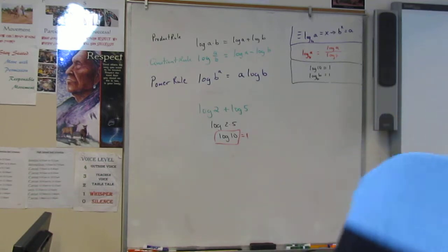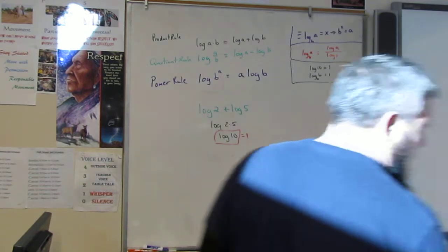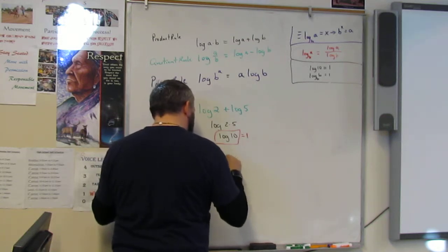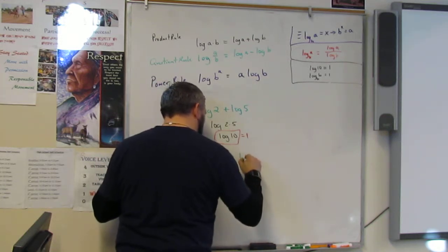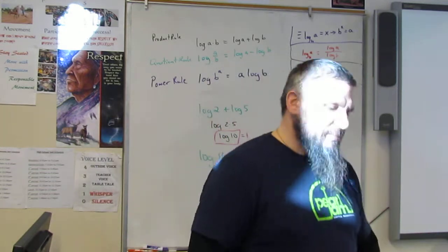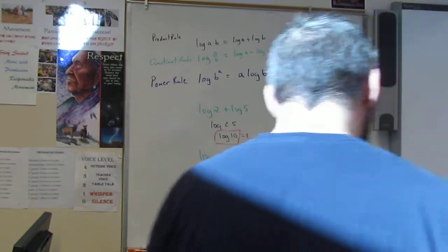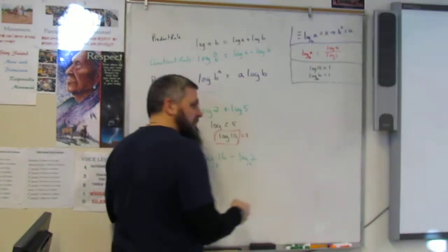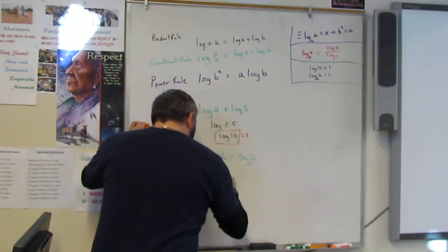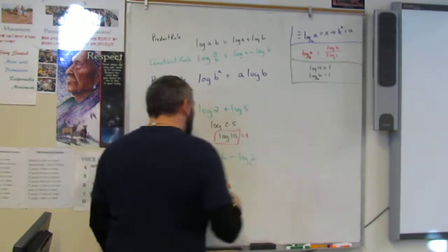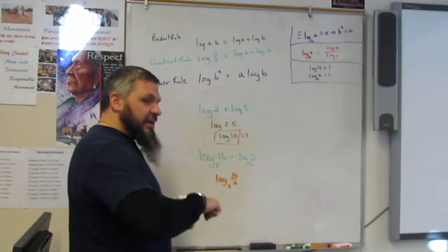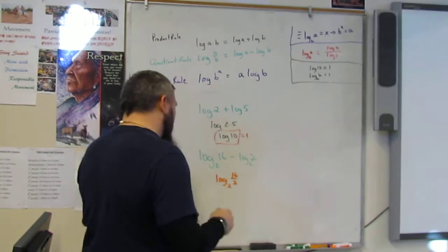Next. 16 and 2, and your bases are 2. Log base 2 of 16 minus log base 2 of 2. Would you divide 16 and 2? Yes. So subtraction is just division. That's it. So it's log base 2 of 16 divided by 2, which is? 8. Log 2 of 8. Log base 2 of 8.